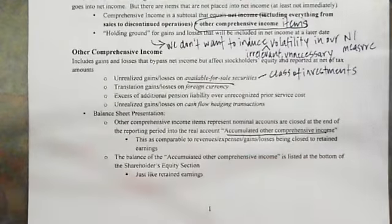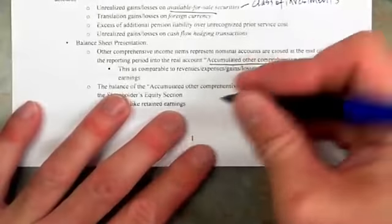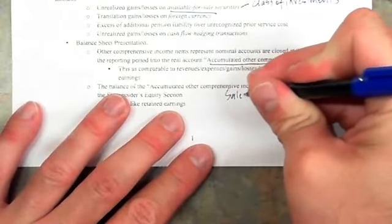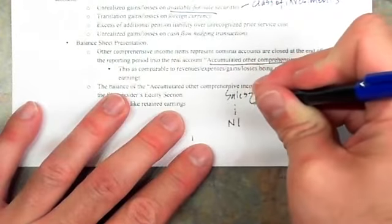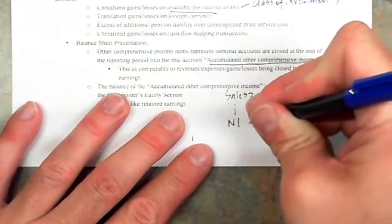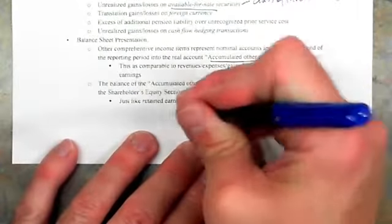Accumulated other comprehensive income is a lot like retained earnings. If all the items from sales all the way down to net income — all those gains, losses, revenues, and expenses — contribute to net income, we take net income and close it to retained earnings. Similarly, if we have comprehensive income below net income, all of those items that contribute to comprehensive income are going to be closed to accumulated other comprehensive income.